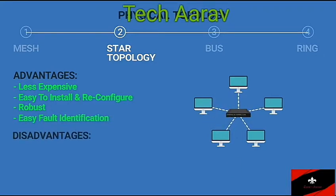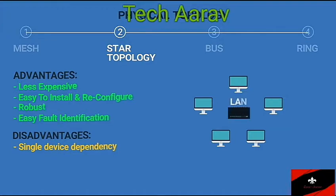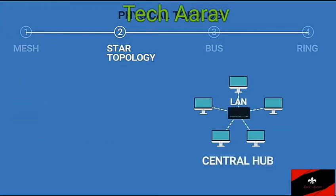Disadvantages: The whole topology depends on a single device — the hub. If the hub goes down, the whole system is dead. The star topology is widely used in local area networks. High-speed LANs usually use a star topology with a central hub.